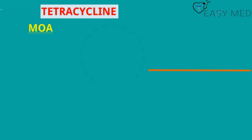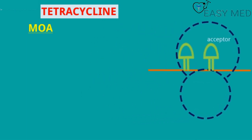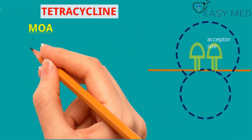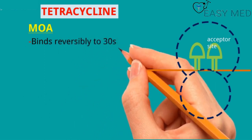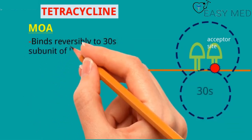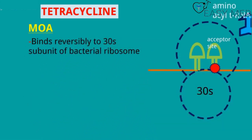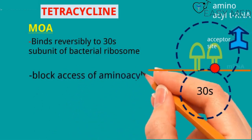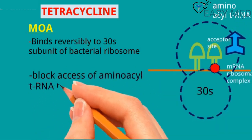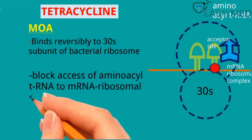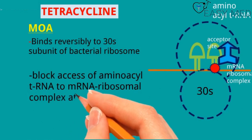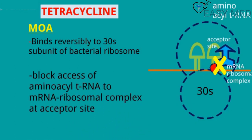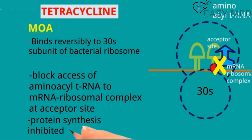Mechanism of action of tetracycline: tetracycline binds reversibly to the 30S subunit of the bacterial ribosome and blocks access of aminoacyl-tRNA to the mRNA ribosomal complex at the acceptor site, meaning protein synthesis is inhibited.